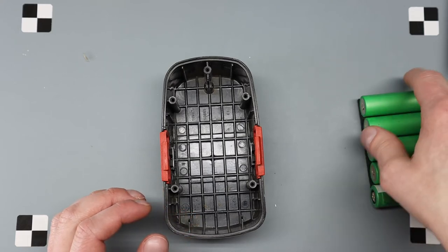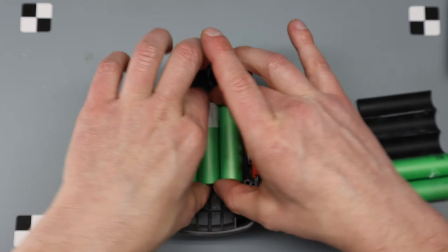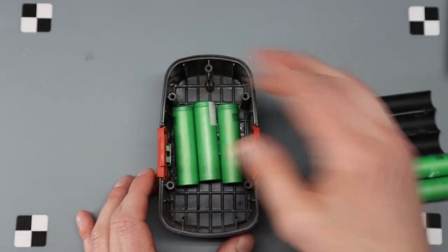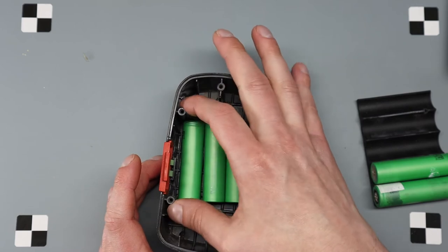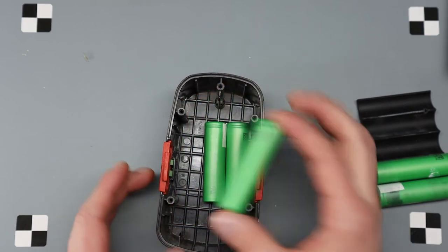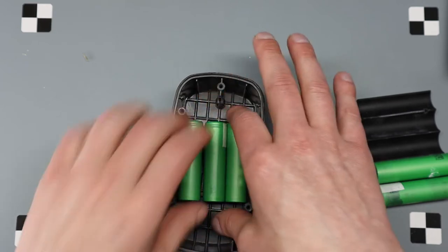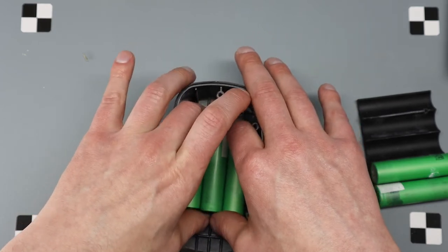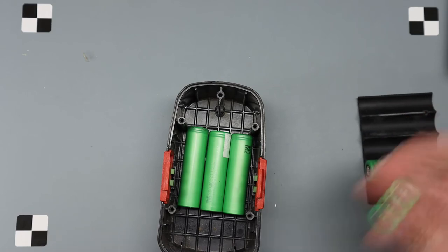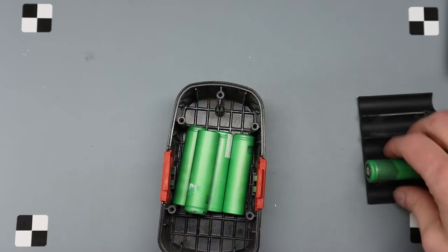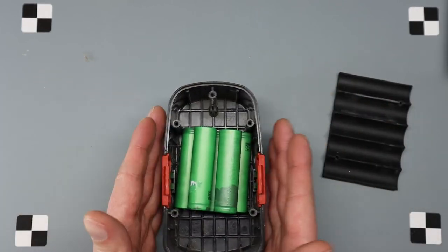So what I plan on doing is putting them in lengthwise. As you can see, they're hitting these posts here. So I'm going to probably have to trim each of these posts on each of the sides just to get it to line up in there straight. And then put them together like that inside.